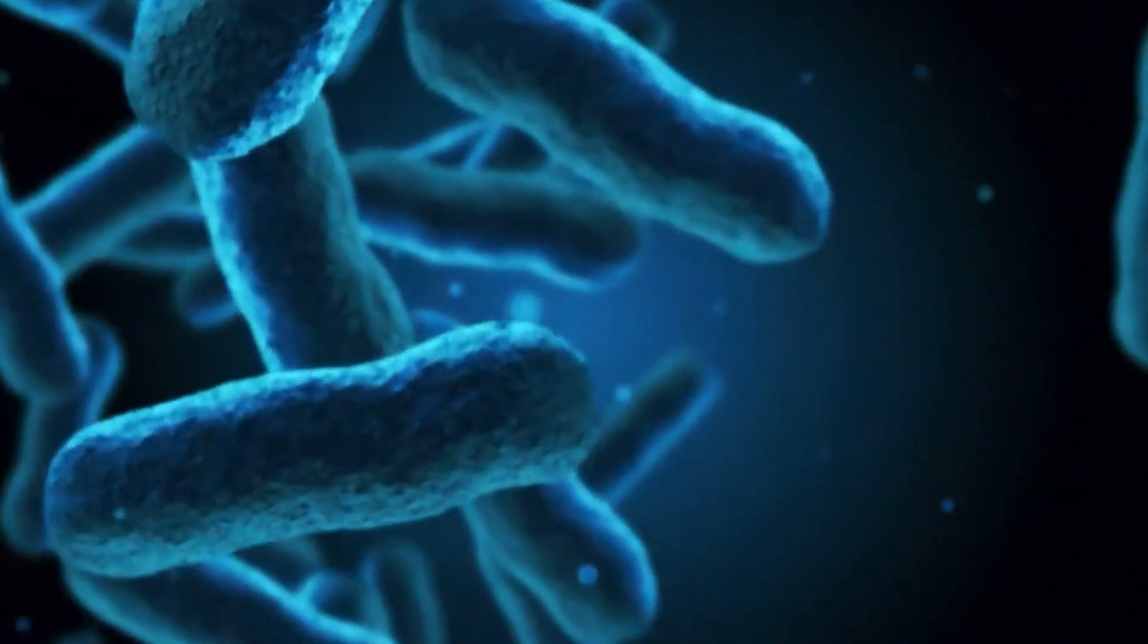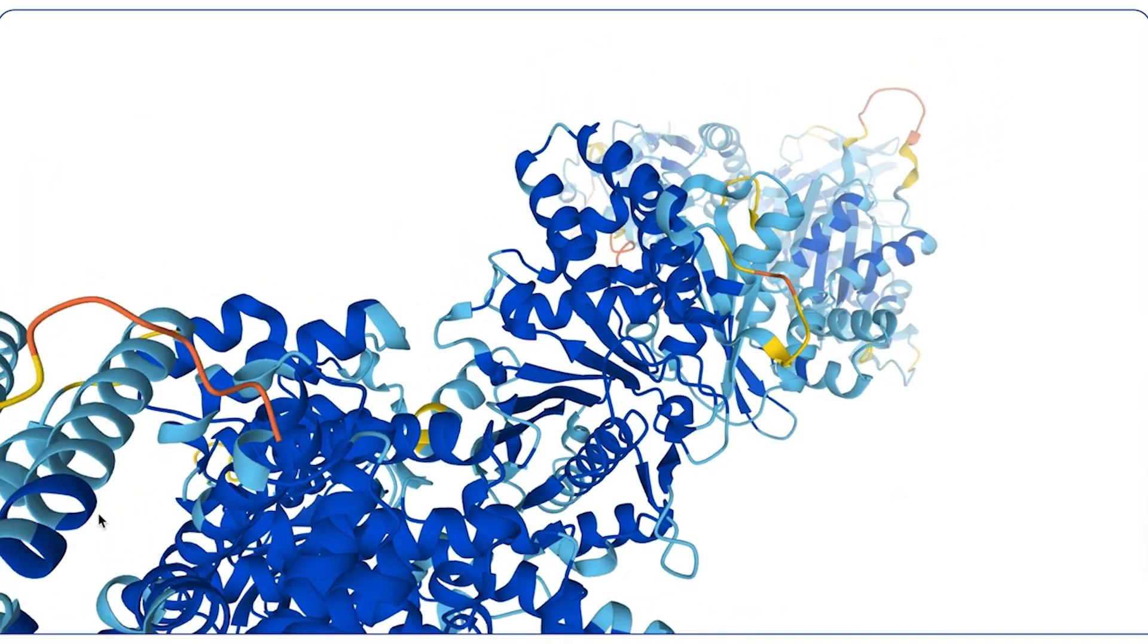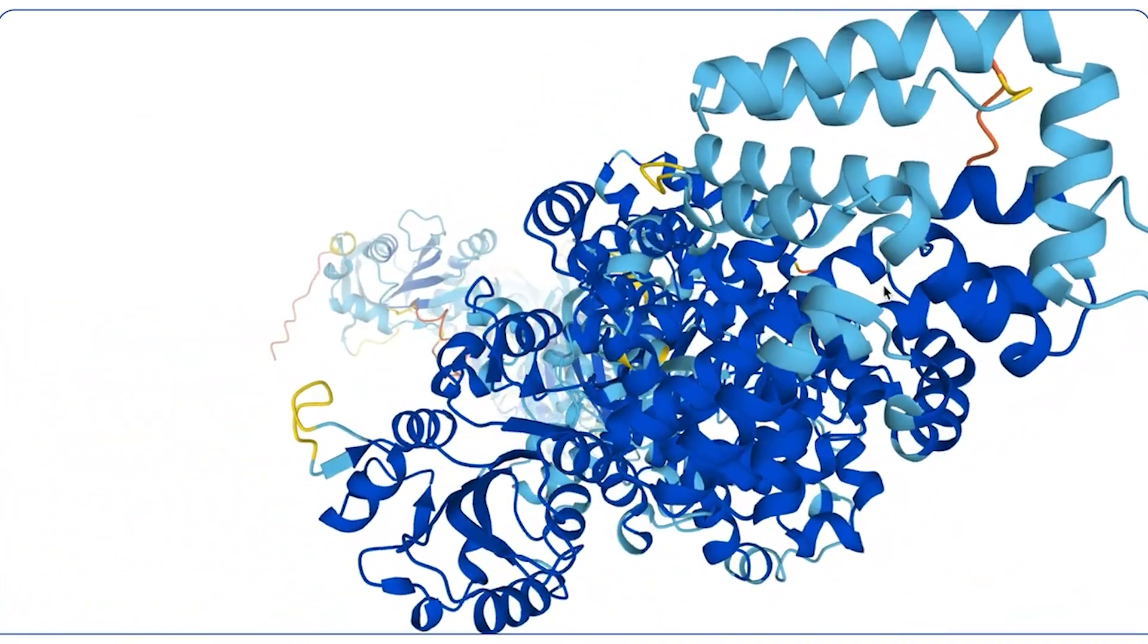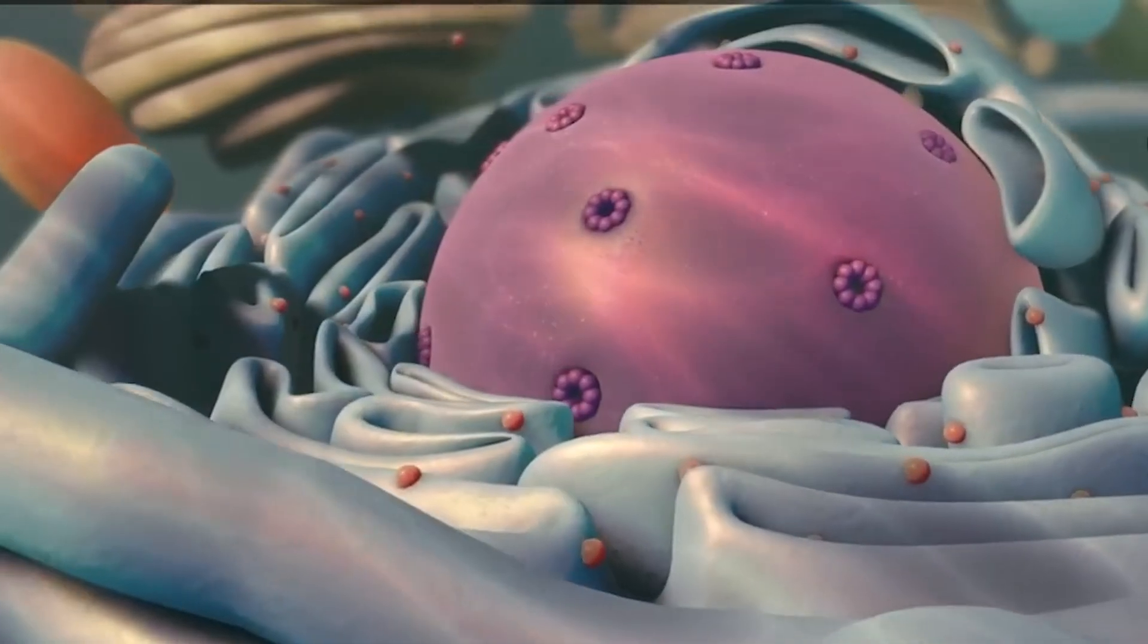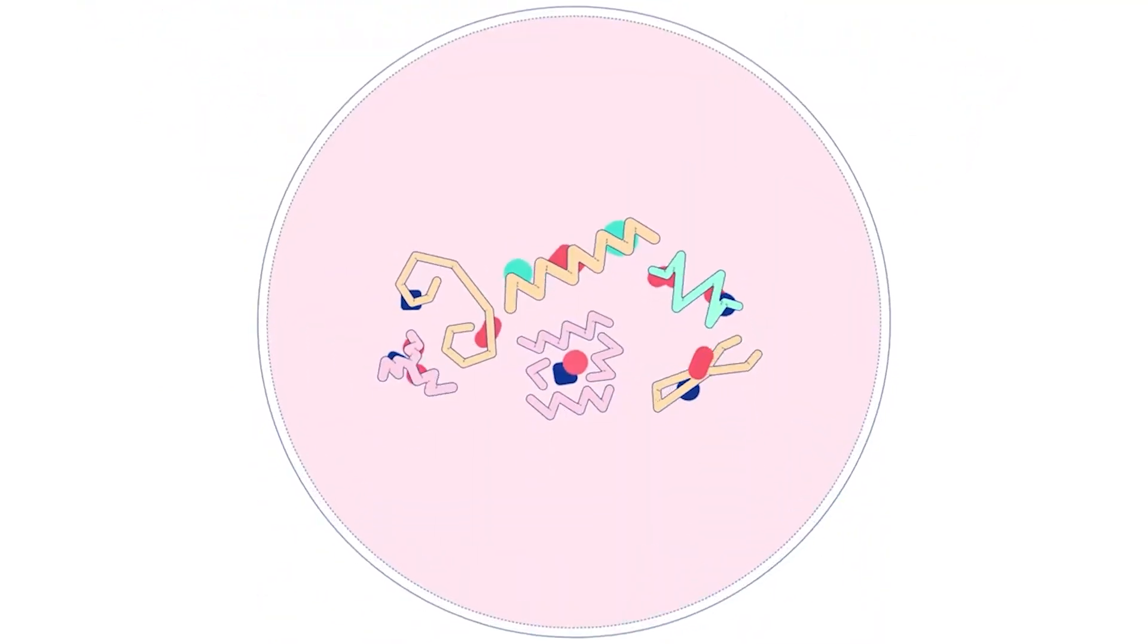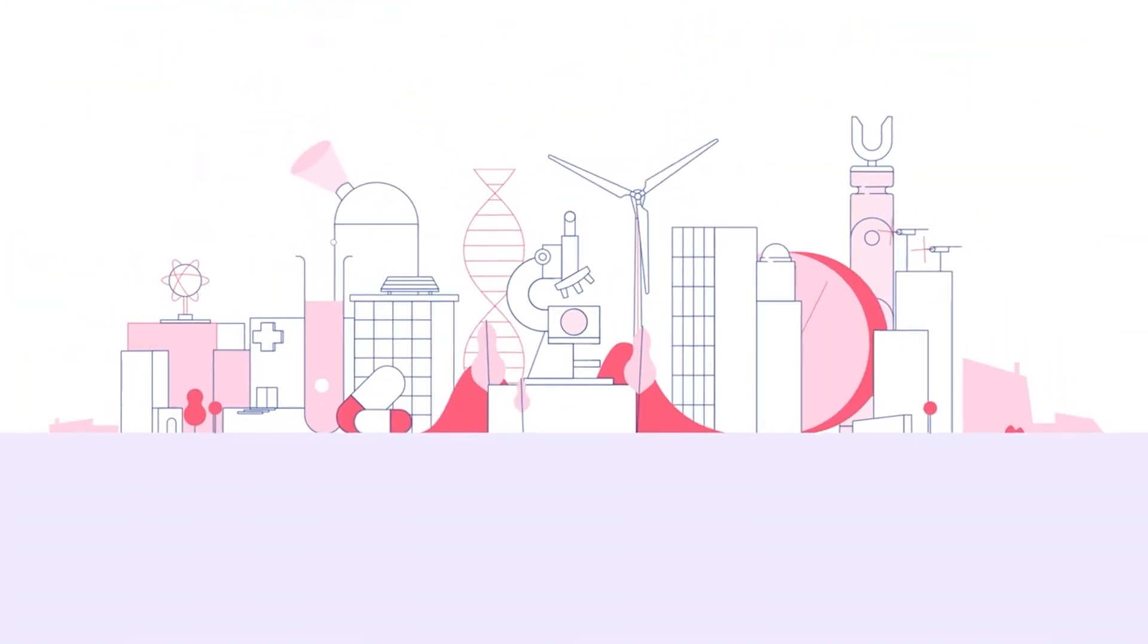But here's where it gets really interesting. Scientists aren't stopping at fixing broken genes. They're now targeting the genes responsible for aging itself. Your body has built-in mechanisms for DNA repair, immune function, and fighting inflammation. The problem? These systems degrade as you age.